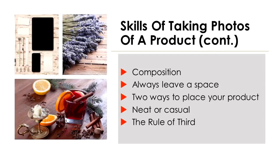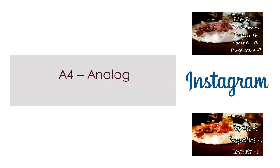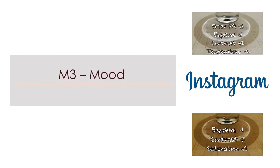Next up are photo editing apps that will help you with designing and editing your photos. VSCO is a favorite photo editing app containing hundreds of filters and settings to create a unique photo. There are four kinds of filters in VSCO. First is the analog filter named A4, which turns the color of your photo into a brown-like warm tone, giving it a vintage feel. Next is the mood filter called M3, which gives a hint of sepia tone and creates a nostalgic feel, giving the illusion of photos captured from an old movie camera.